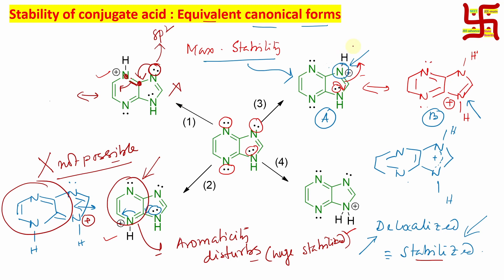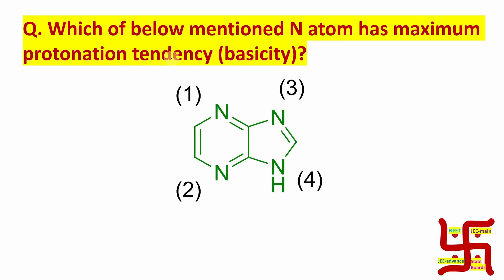So in this way, only the equivalent canonical form option is left, and that is the true answer. I know you might feel that we could have just stated this option from the beginning — why go through such complication? But I believe you should think in multiple ways. Remember, entrance exams are not easy. You need to prepare yourself to know everything — every aspect — not only the right answer, because questions could be modified in different ways. So what is the answer? Which nitrogen has maximum protonation tendency? The answer is option 3.